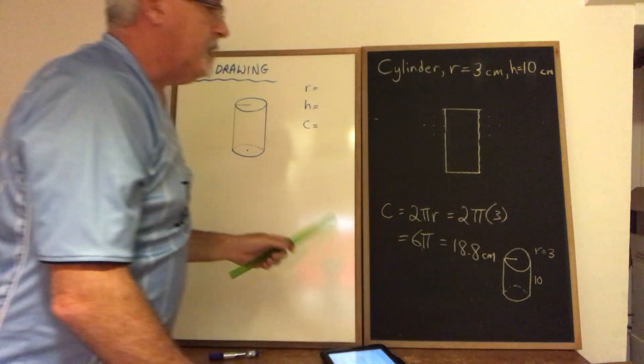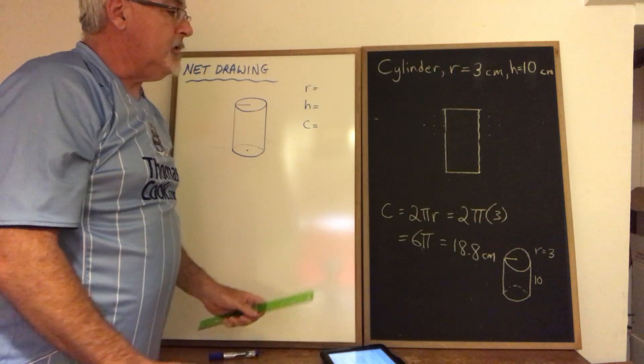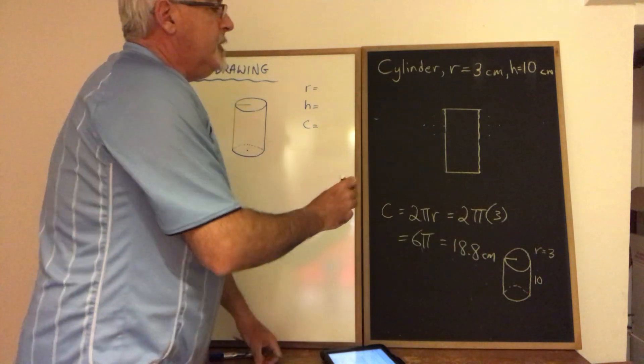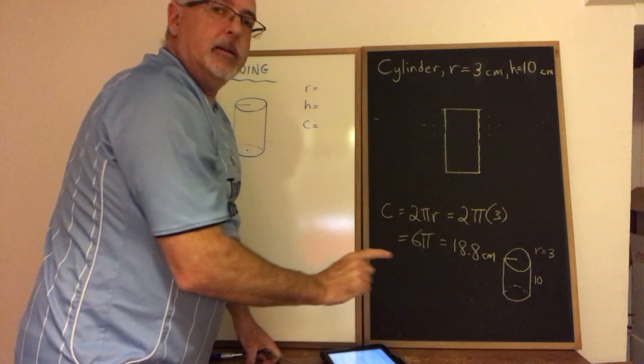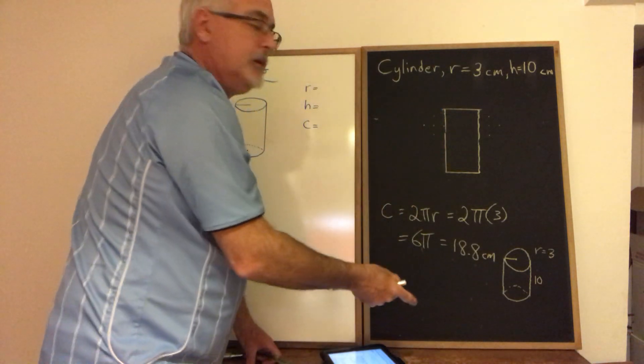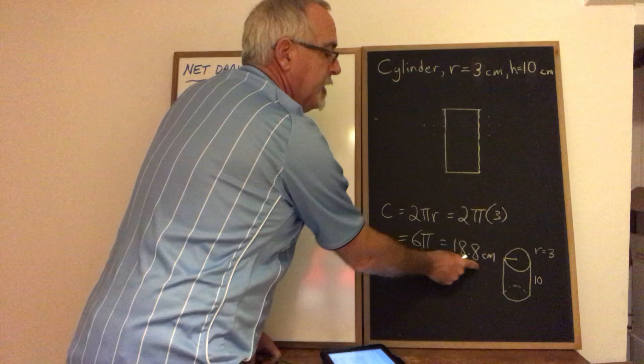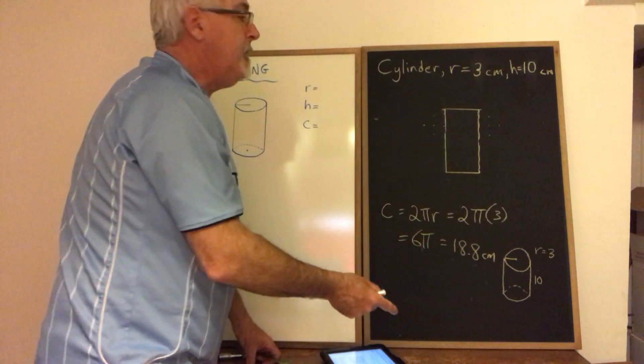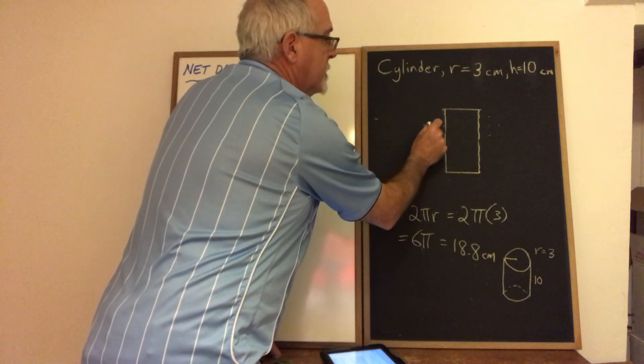We have the rectangle part of our drawing. And what we need now are the circles. Now we can put the circles up near the top or down near the bottom. That doesn't matter. But they have to be touching the side that represents the circumference which means they have to be touching the 18.8 centimeter side. So I'm going to draw my circles here and here.